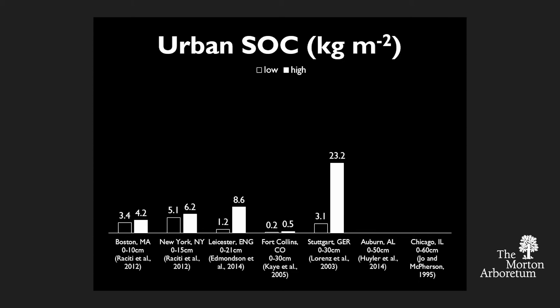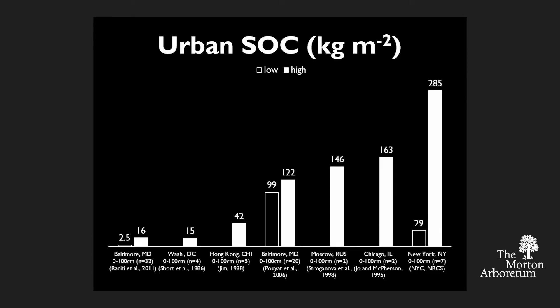That's about a third of Peter's weight in our highest estimates, and maybe down to his foot in our lowest estimates in the 0 to 30 centimeters. When we get deeper, we find that the carbon amount might be much more variable, and it also increases. This is some literature finding soil organic carbon density down to about 100 meters. You see quite a bit of variation — from 2.5 up to 285 kilograms per square meter in New York, or about 4 Peters in a meter of soil.